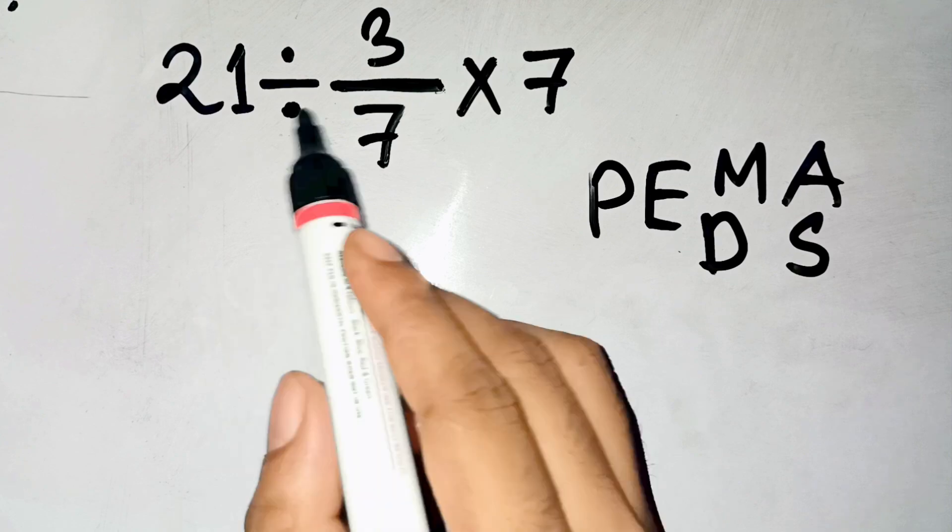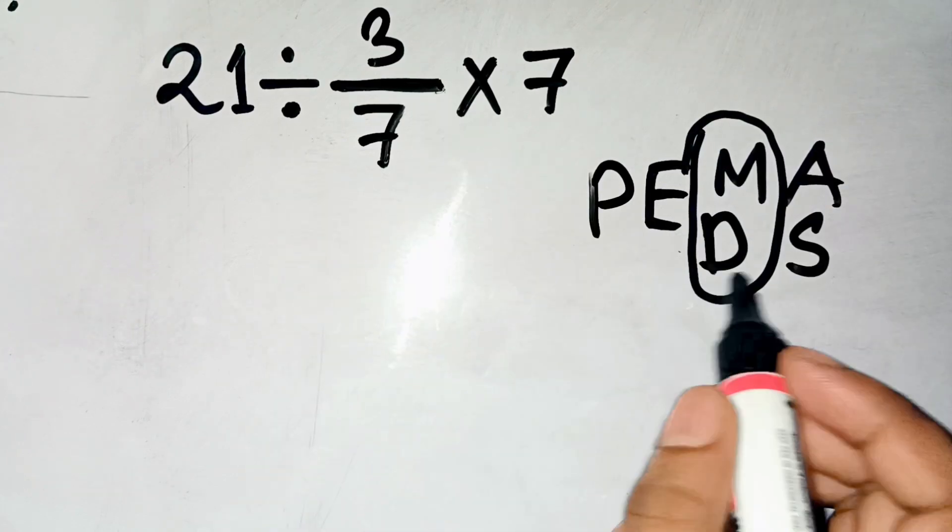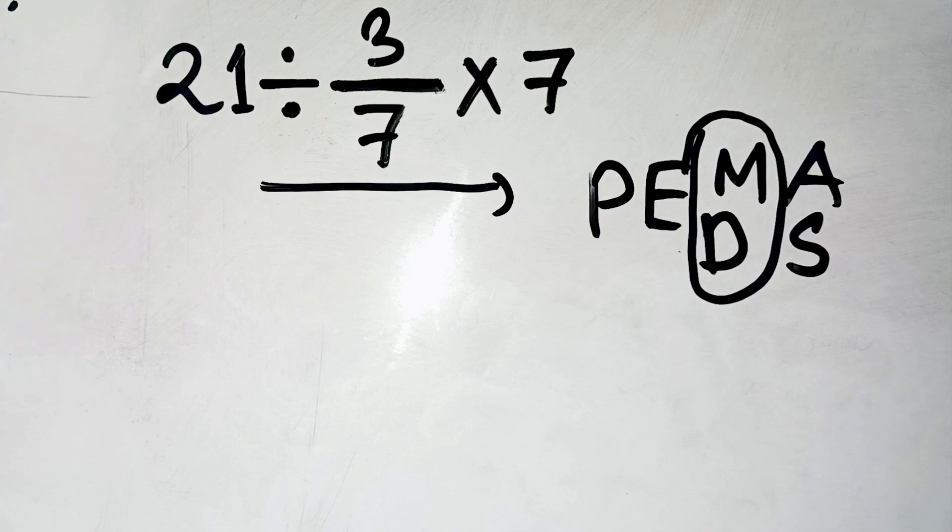And here's the key. Multiplication and division are at the same level of priority. They're handled from left to right, not whichever you feel like doing first.